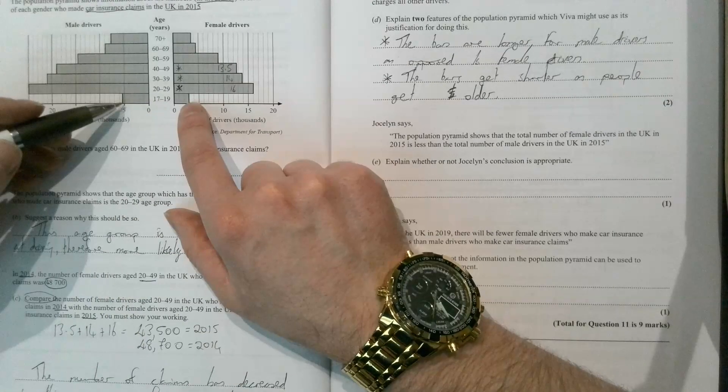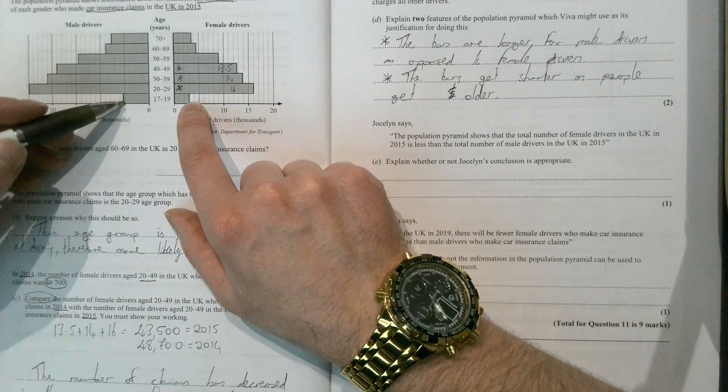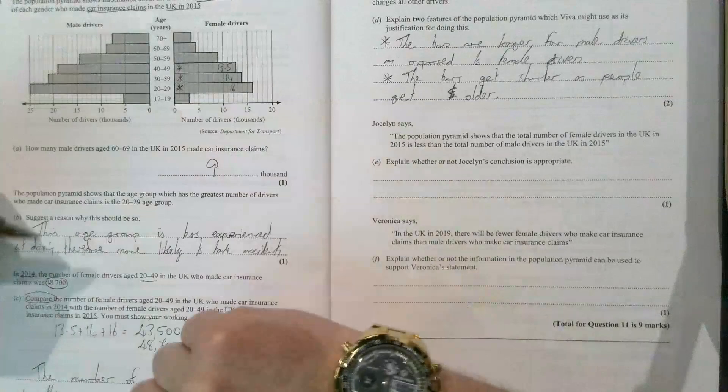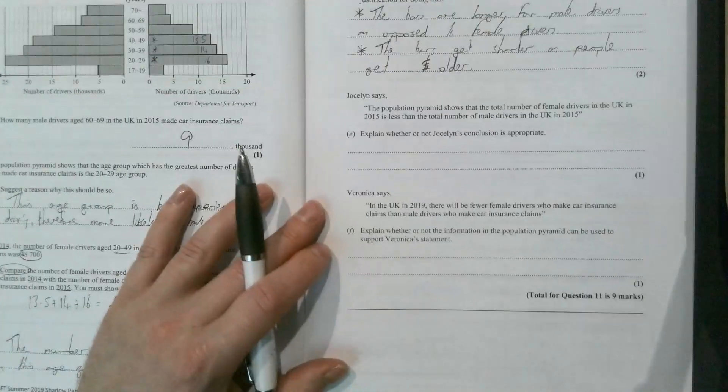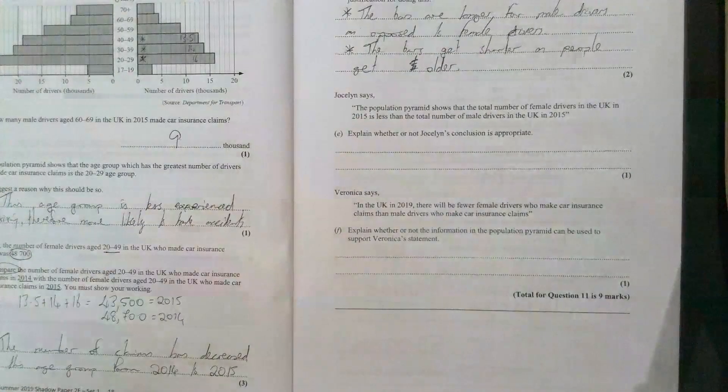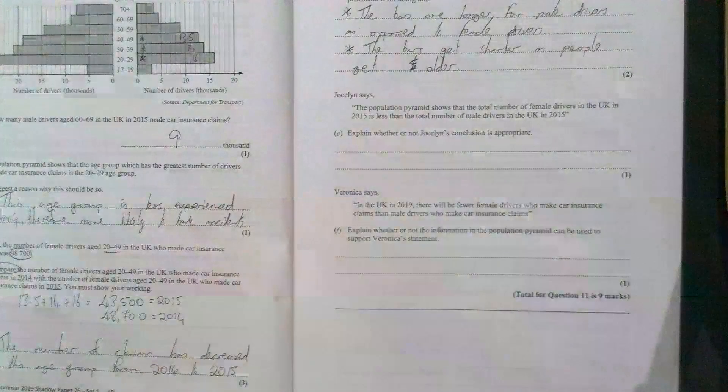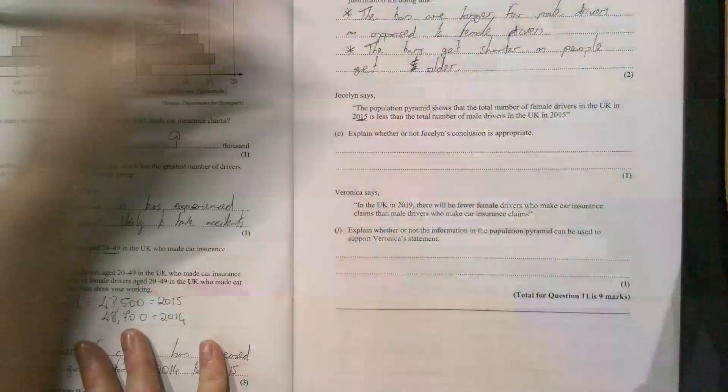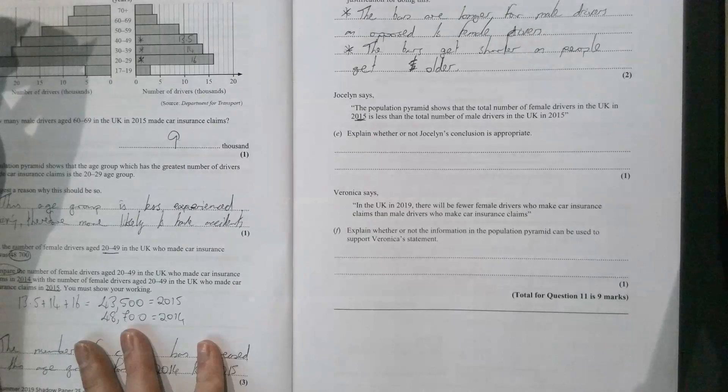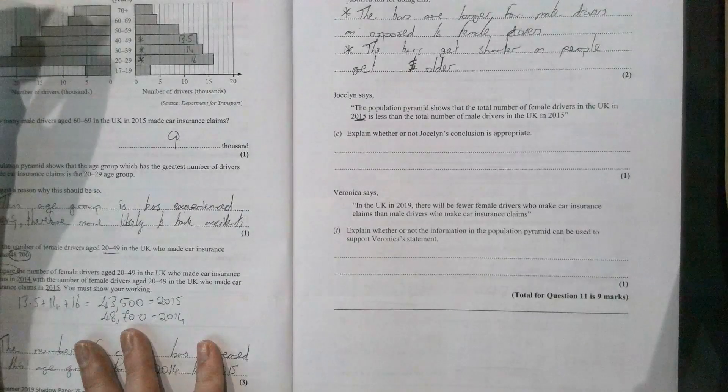Jocelyn says the population pyramid shows that the number of female drivers in the UK in 2015 is less than the total number of male drivers in the UK in 2015. We need to explain whether or not Jocelyn's conclusion is appropriate. Questions like this, you need to be careful.